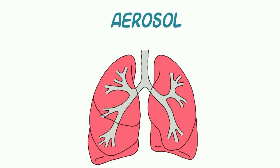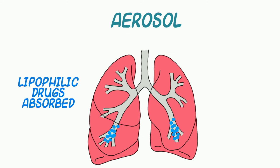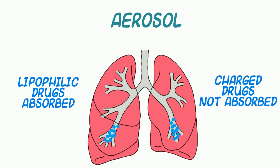For tracheobronchial absorption, drugs administered by aerosol lead to drug deposition on bronchiole or bronchiolar mucosal surfaces. The large surface area and high local concentrations can result in quite rapid absorption of lipophilic drugs into the circulation. Conversely, hydrophilic or charged drugs like the anti-muscarinic ipratropium will have lower absorption rates from this location, thereby sustaining desired local effects. An example of alveolar absorption is gas anesthetics, which are generally small volatile drugs with very high lipophilicity allowing rapid diffusion through the alveoli into the bloodstream.